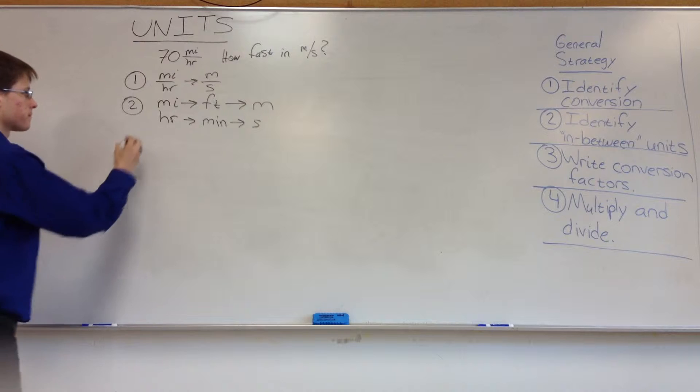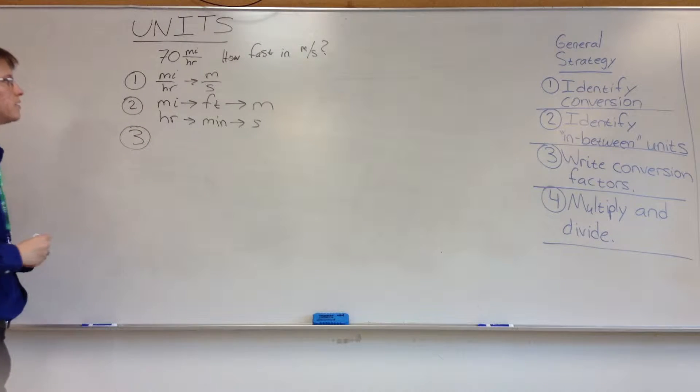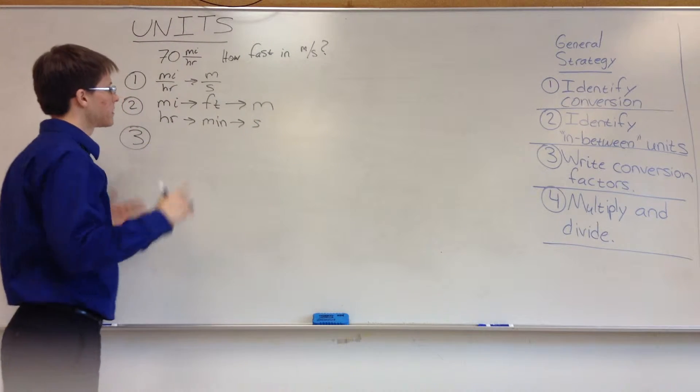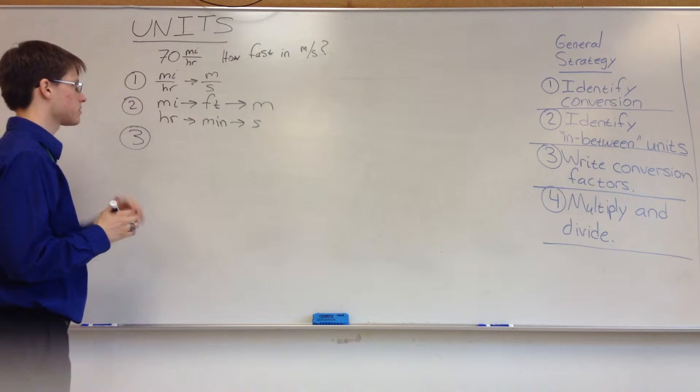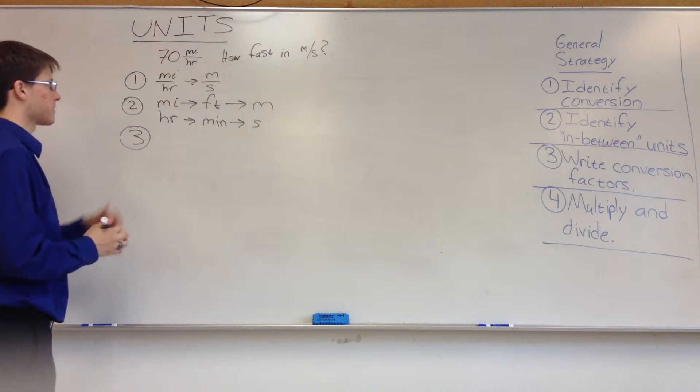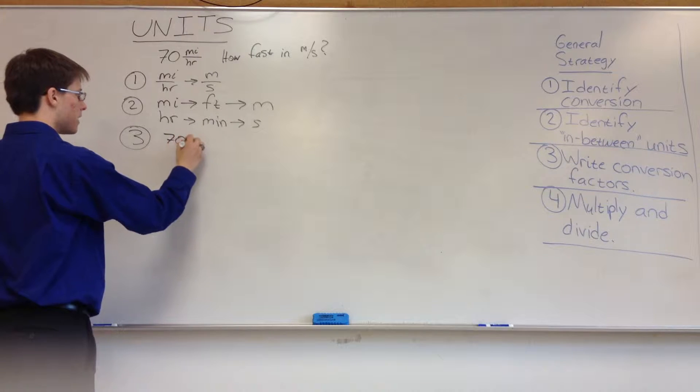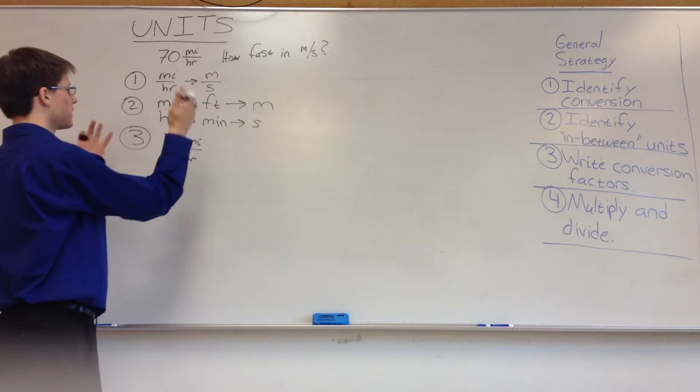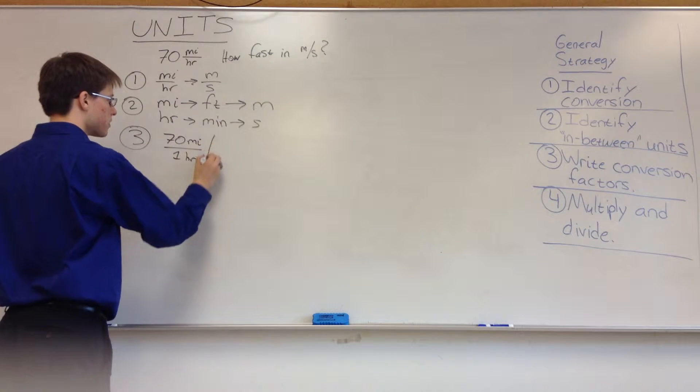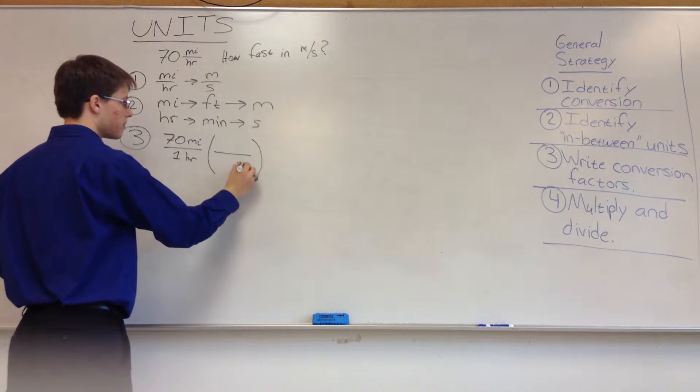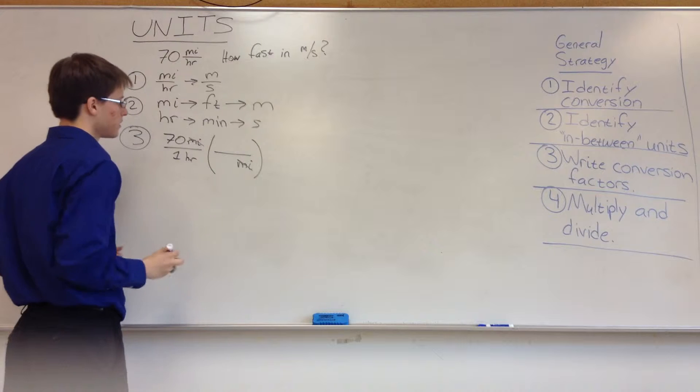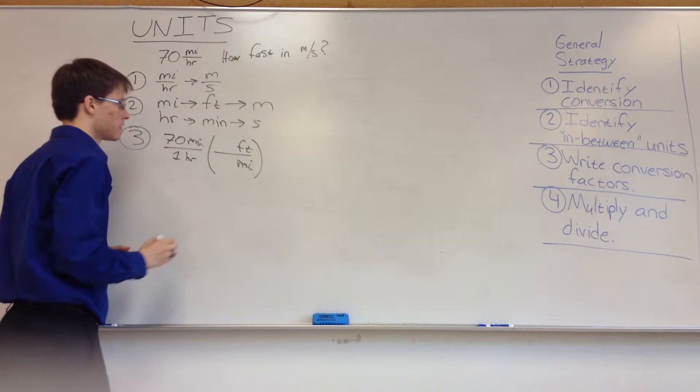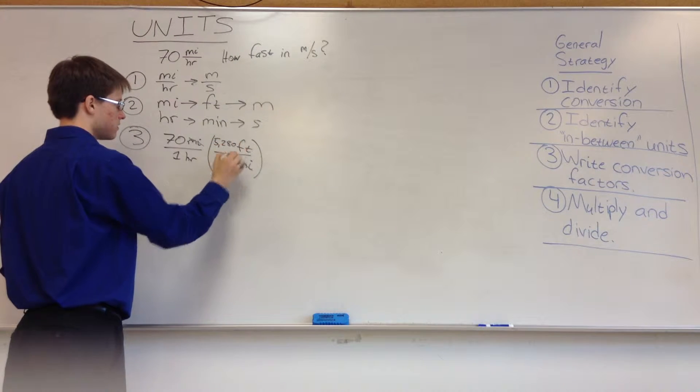So then for step three, we have to write the conversion factors. Now, the way that I prefer to do this is to just put everything together in one line. Because what you can actually do is you can pick one to start with. So let's pick the length ones. Let's pick miles. So we start with 70 miles for every one hour. And then we're going to say, let's just pretend we're just converting miles. That's all we're worried about. So we're going to do miles. We have a conversion factor here. We're going to put miles on the bottom, so we cancel out the two miles. And then we're going to have on top, we're going to have feet. And we know there are 5,280 feet in one mile.